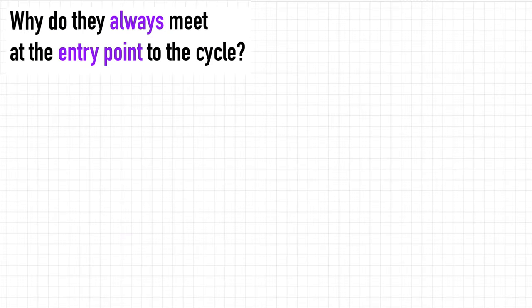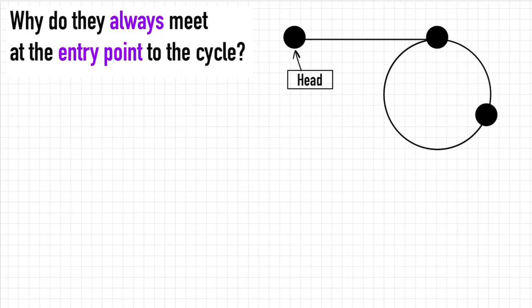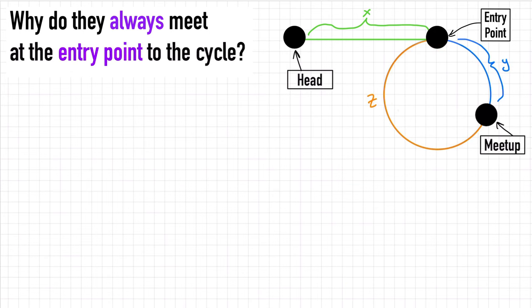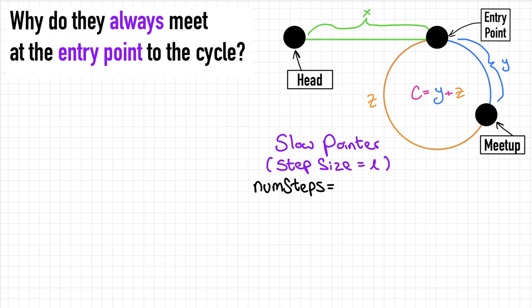So why do they always have to meet at the start of the cycle? We have a list with some part before the cycle — let's say its length is x. There is a point where the cycle starts and a point on the cycle where the pointers met in the first phase of the algorithm. Let's call the distance between the start of the cycle and the meet point y. We'll call the remaining distance z, and the length of the cycle c, so c equals y plus z. The number of steps the slow pointer made before meeting at the meet point is x plus y, plus possibly i full laps.